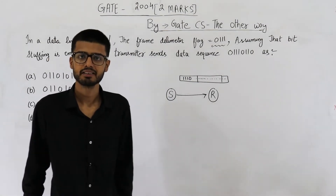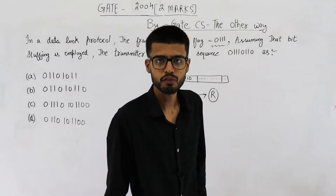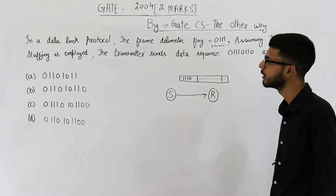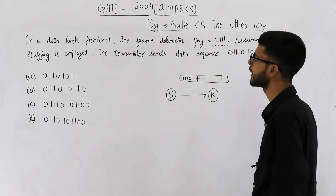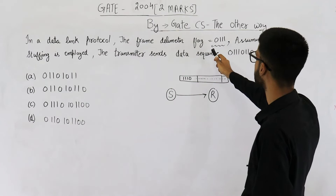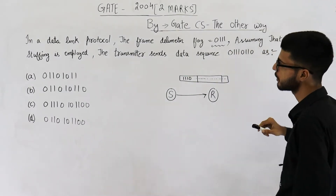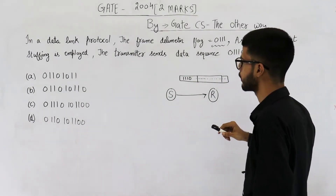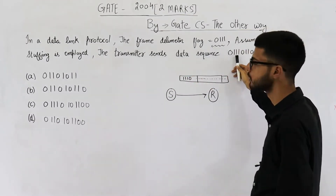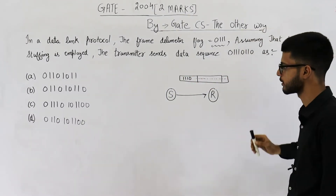Hello people, welcome back. This question is from the Gate exam of 2014, and it is also for two marks. They are saying: in a data link protocol, the frame delimiter flag is 0111. Assuming that bit stuffing is employed, the transmitter sends the data sequence 011101110.